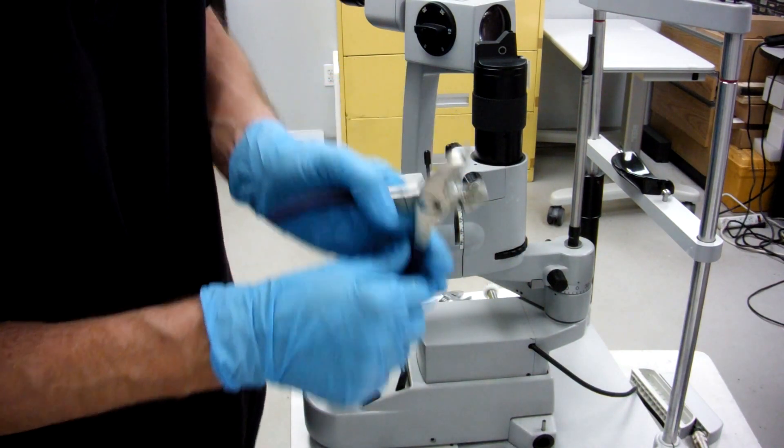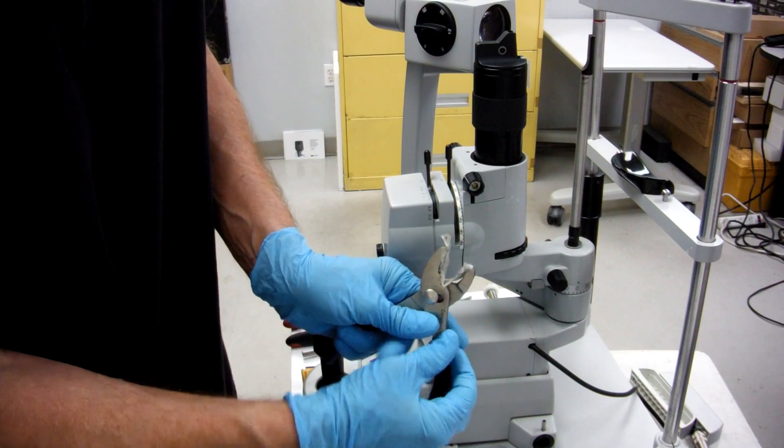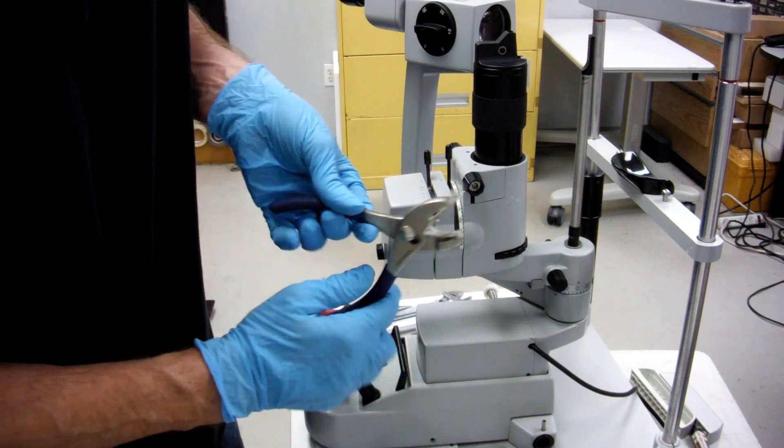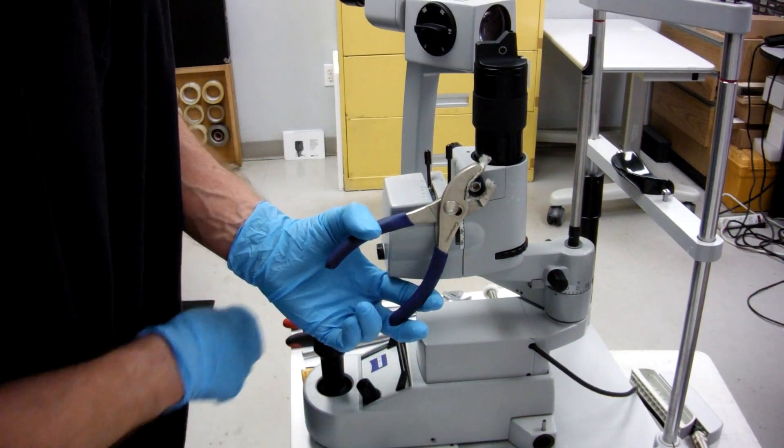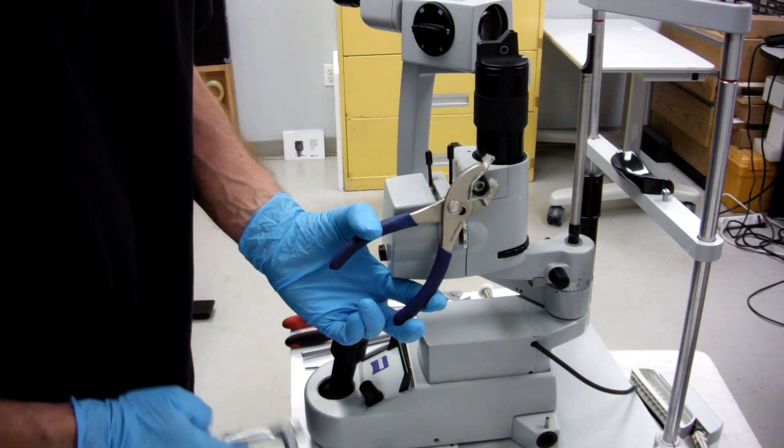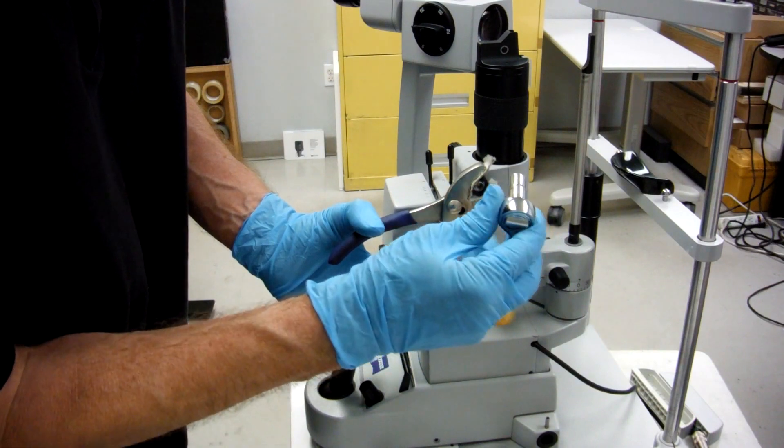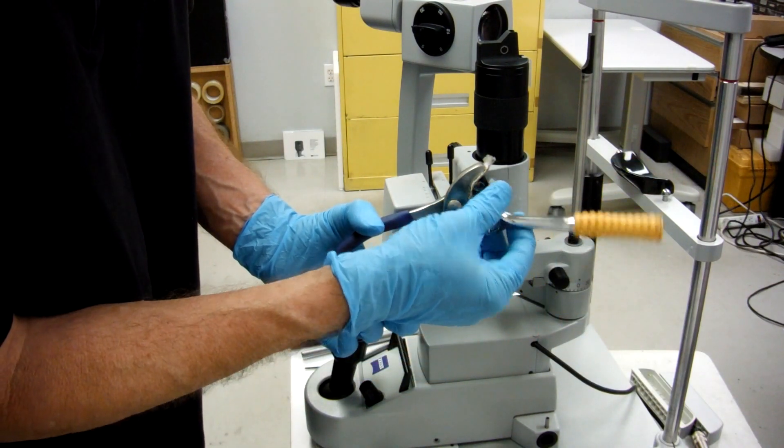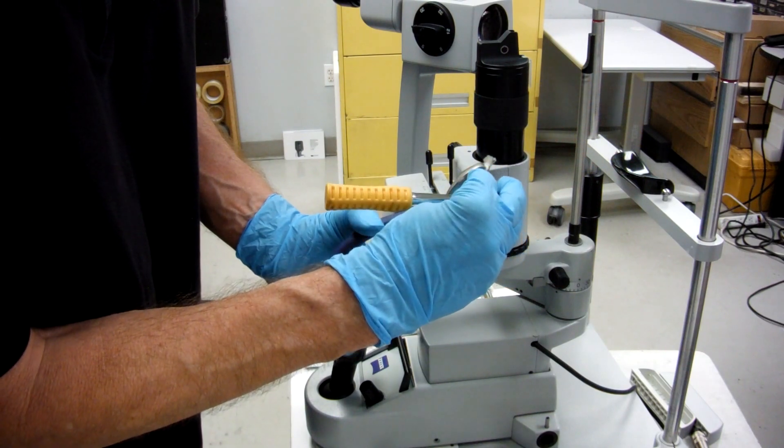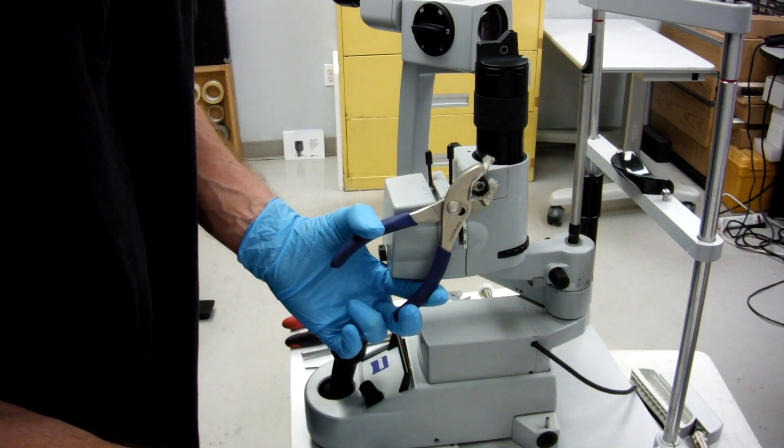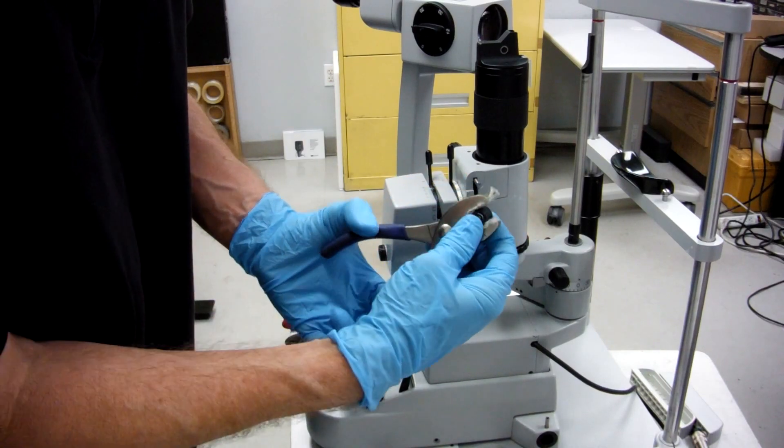To get those off, put something to insulate your pliers so you don't scratch up your knob. Hold it, get your socket. This is a 7 millimeter or 9/32nd. Loosen it, probably half is all you would need, and then you can pull it off.